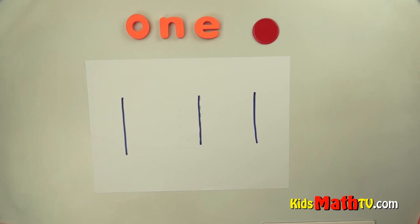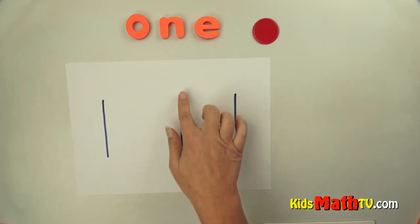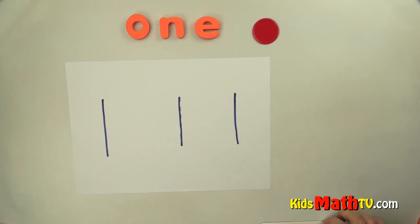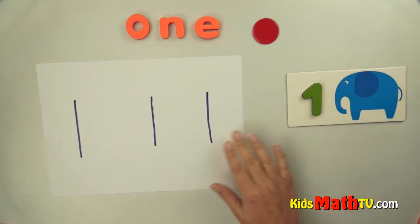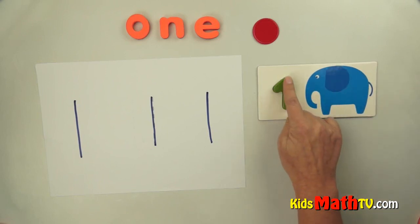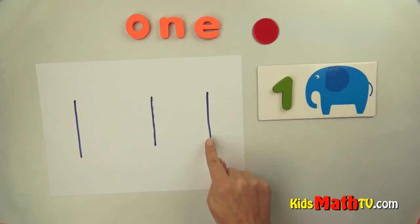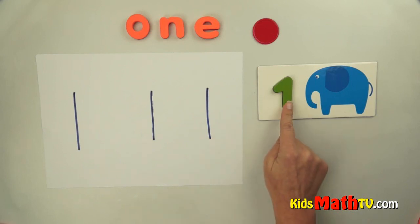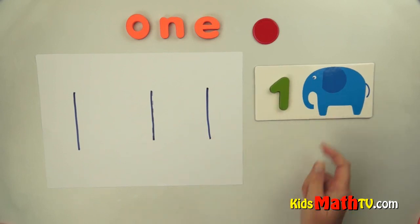Sometimes the number one looks a little different than just a straight line. Here's an example of one elephant. This is just one elephant. But this one looks a little different than this one. But it's still a one. One elephant.